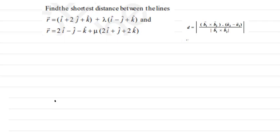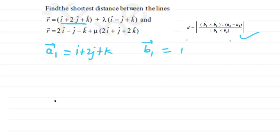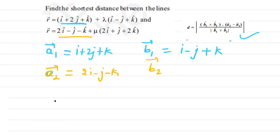Here is a question: find the shortest distance between two lines. Using the formula, first we identify a1 and b1 vectors from the first line: a1 = i + 2j + k and b1 = i − j + k. Then from the second line: a2 = 2i − j − k and b2 = 2i + j + 2k.